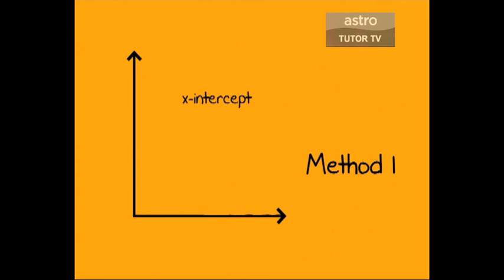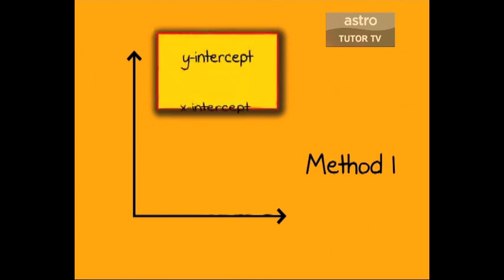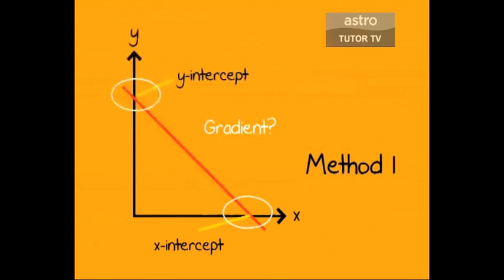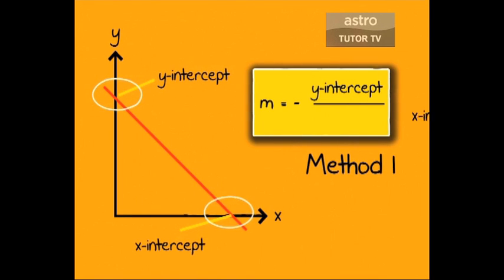Method 1: Use this if you already know the value of the x-intercept and y-intercept. Remember this? The x-intercept of a straight line is the value of x where the straight line cuts the x-axis, whereas the y-intercept is the value of y where the straight line cuts the y-axis. So, if you know the x-intercept and y-intercept, use this simple formula to calculate the gradient. The formula is gradient m equals negative y-intercept divided by x-intercept.